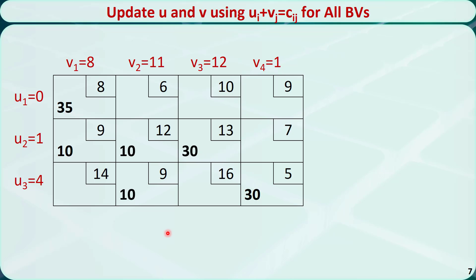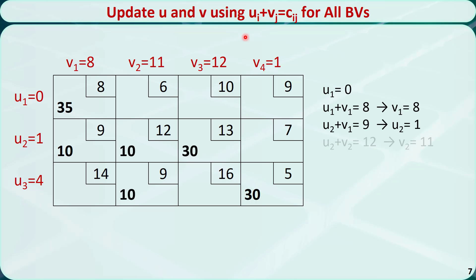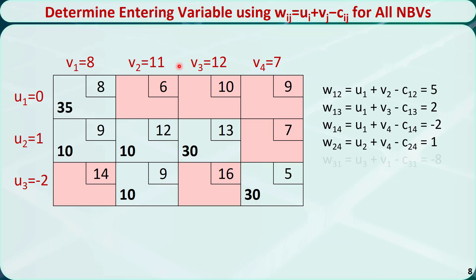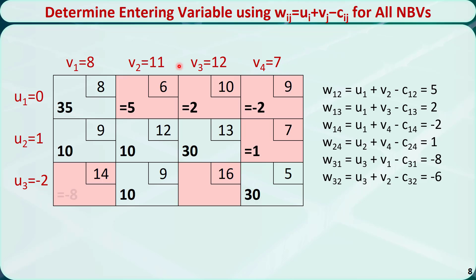In order to determine if this new basic feasible solution is optimal, we need to update u's and v's. These are the updated u's and v's. We identify all the non-basic variables and mark them in red. For each non-basic variable, we calculate wij. Not all the wij are less than or equal to 0, so it is not optimal yet. The most positive wij is equal to 5, so this cell will be the entering variable.